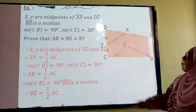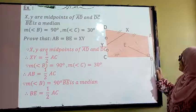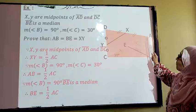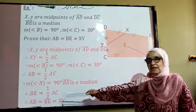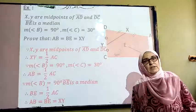So AB equals half AC, and all these line segments equal half AC. Therefore AB equals BE equals XY.